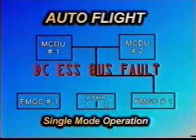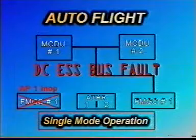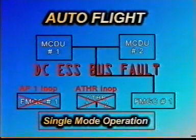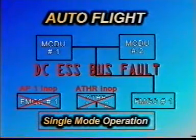With DC Essential Bus fault, the FMGC1 is lost with consequent loss of Autopilot 1. The Autothrust is also lost for the remainder of the flight due to loss of Engine Interface Unit 2.